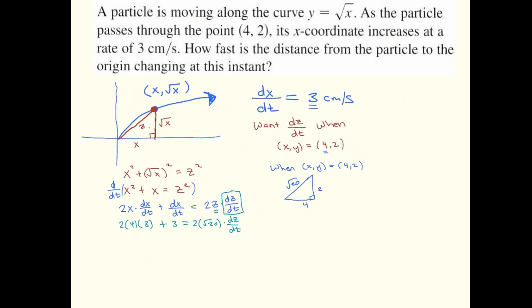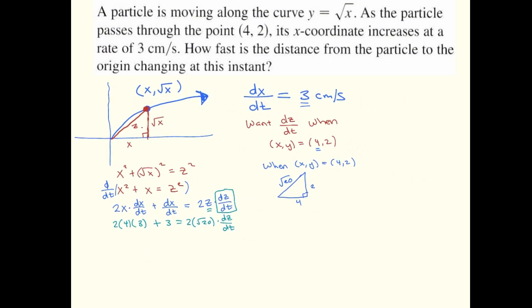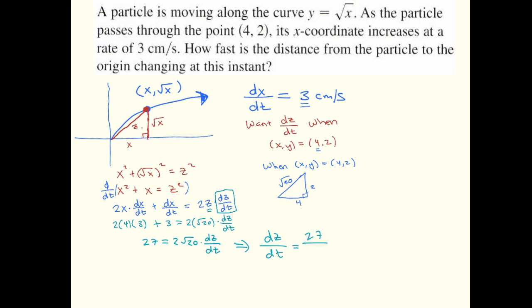Okay, so this becomes 24 plus 3, so it's 27 equals 2 root 20 times dz/dt. And dividing both sides by 2 root 20, we get dz/dt is equal to 27 divided by 2 root 20, and that gives you about 3.02 centimeters per second.